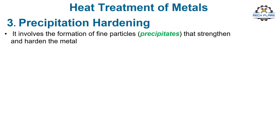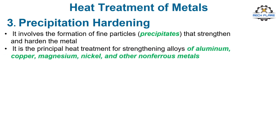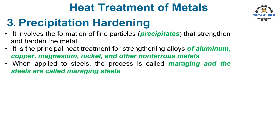Precipitation hardening involves the formation of fine particles — precipitates — that act to block the movement of dislocations and thus strengthen and harden the metal. It is the principal heat treatment for strengthening alloys of aluminum, copper, magnesium, nickel, and other non-ferrous metals. Precipitation hardening can also be used to strengthen certain steel alloys. When applied to steels, the process is called maraging — an abbreviation of martensite and aging — and the steels are called maraging steels.